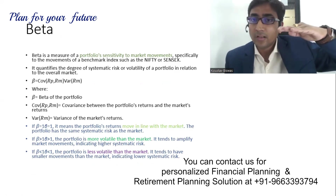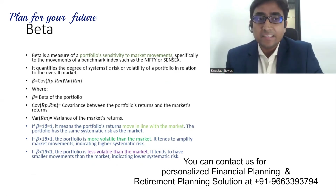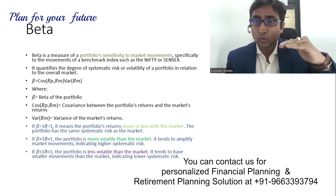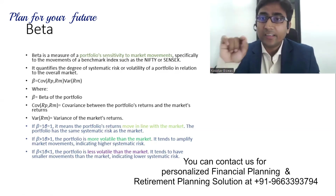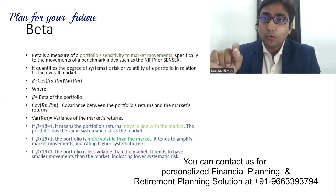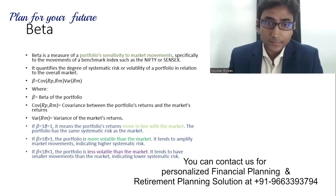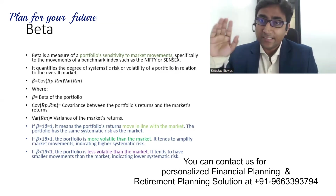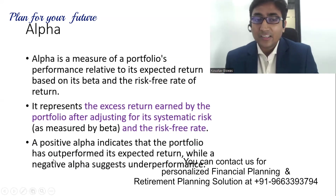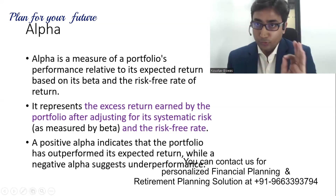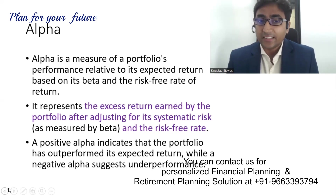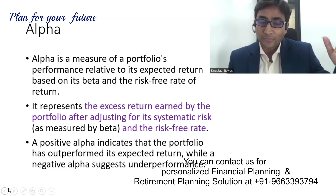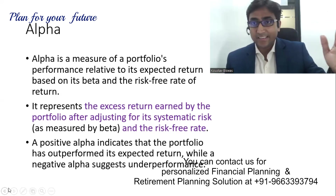Beta measures how much the Sensex and my portfolio move — how much more my portfolio moved on top of that. If beta equals 1, your portfolio is as volatile as the market. If beta is less than 1, your portfolio is less volatile than the market. Alpha talks about the excess return earned by the portfolio after adjusting for its systematic risk and the risk-free rate. A positive alpha indicates the portfolio has outperformed its expected rate, while a negative alpha suggests it has underperformed.